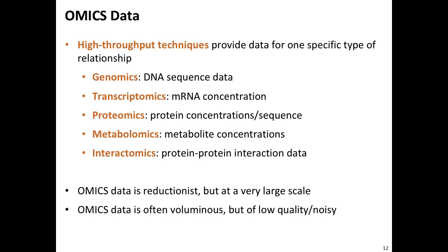All of these different types of data have one thing in common — it's basically reductionist, when you think about it philosophically. We are trying to take this cell apart and produce a bill of materials telling us you have 15 copies of protein A and 20 of protein B. The problem with this data is it's often quite large and pretty noisy. If you measure one protein's concentration in triplicate you get a pretty accurate estimate, but if you do that for 50,000 proteins in parallel, you pay for that — there's no free lunch.